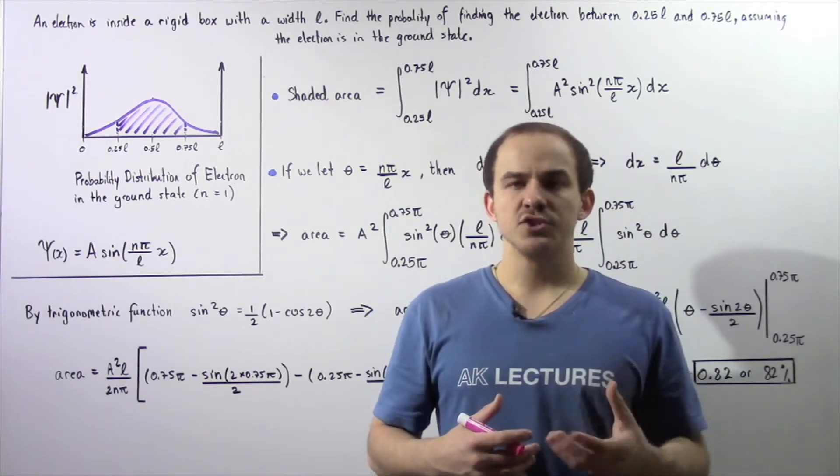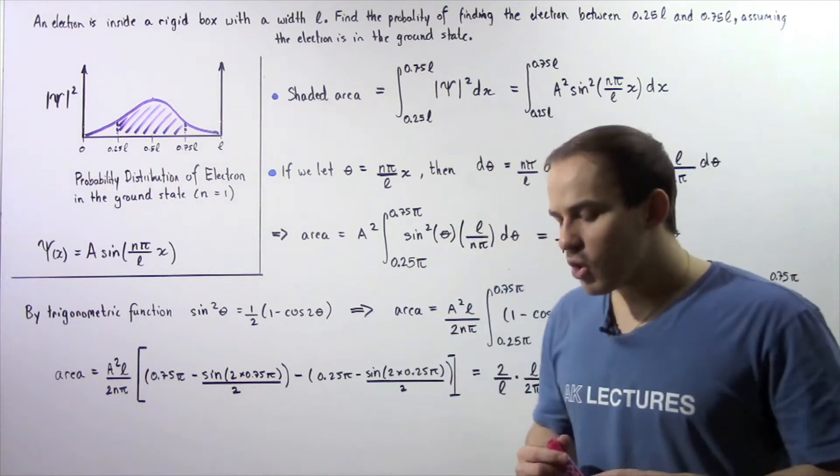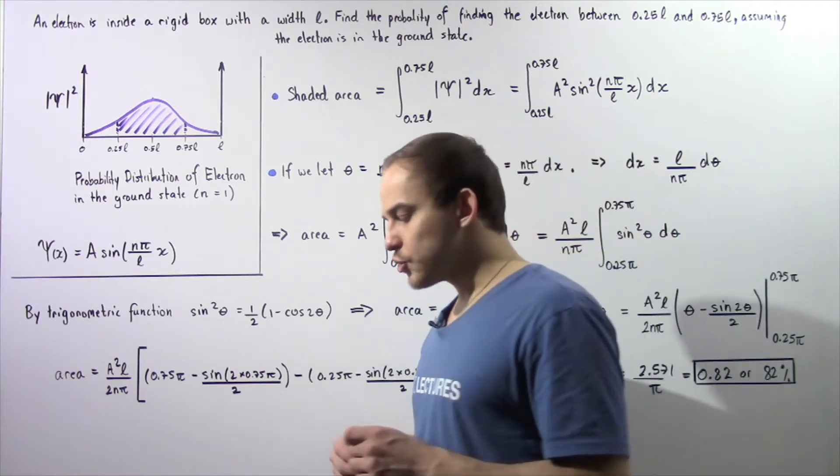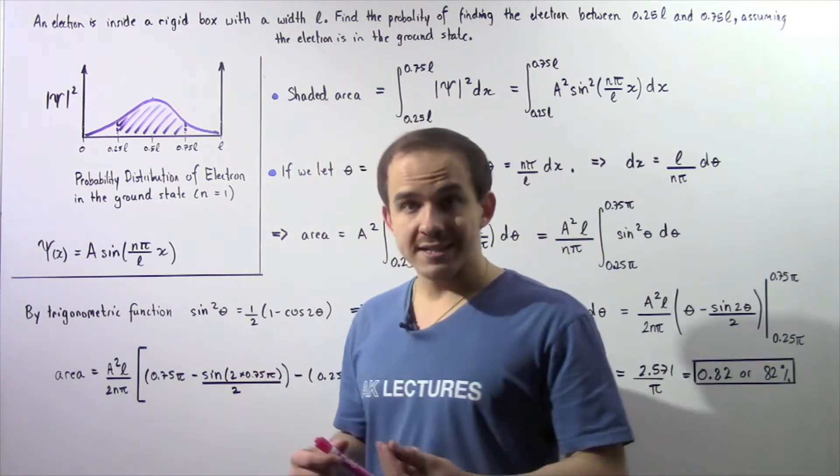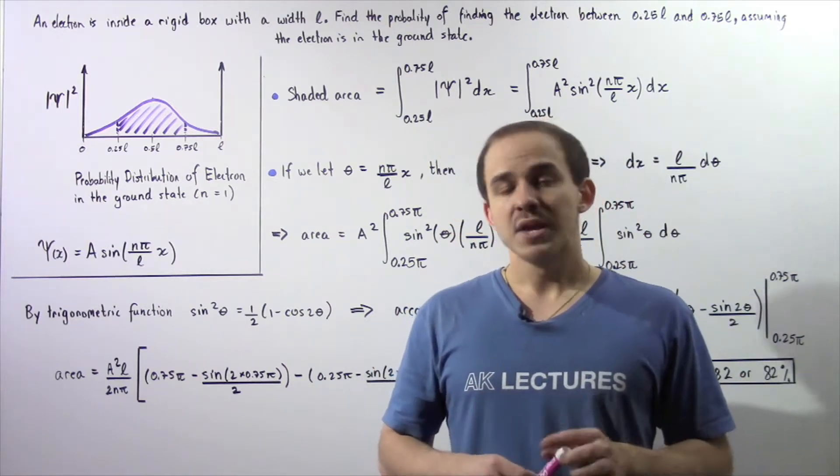Let's continue our discussion of particles inside rigid boxes. Suppose we have an electron traveling inside a rigid box, an infinite potential well, with the width given by L.